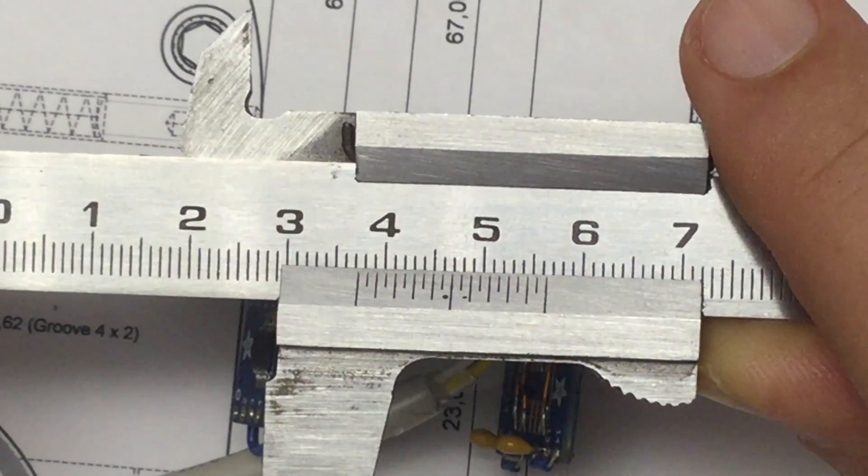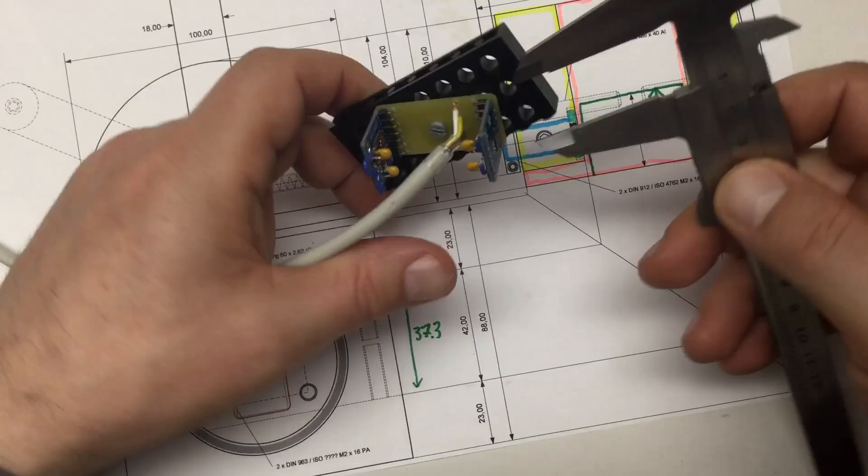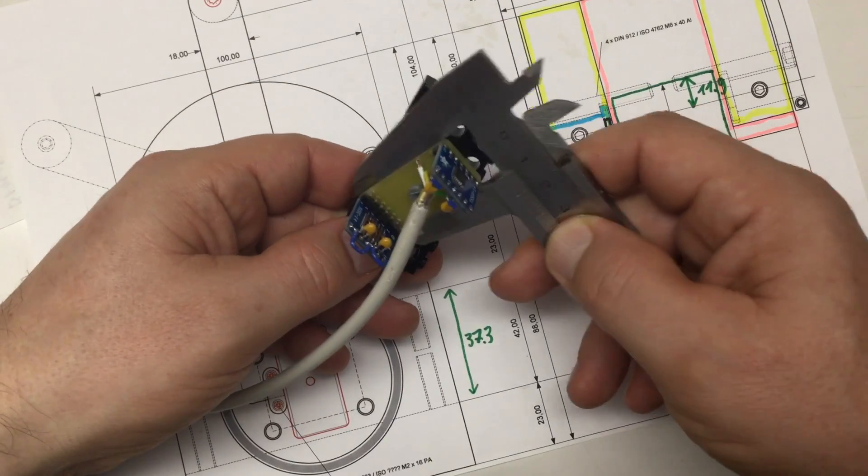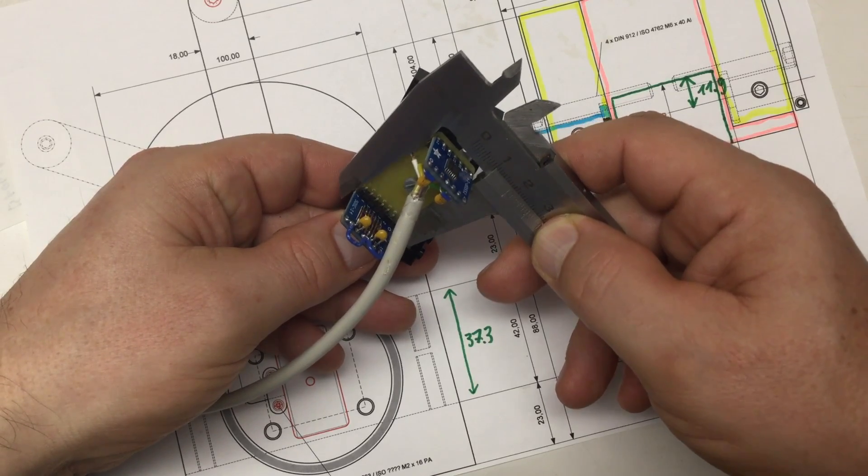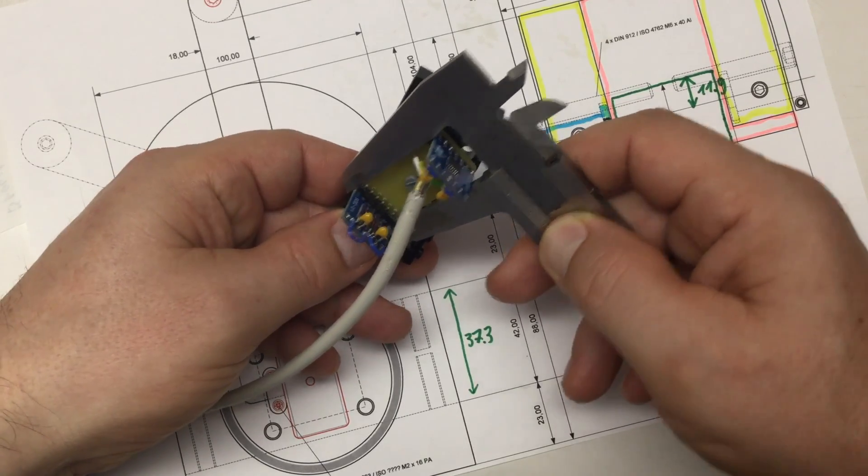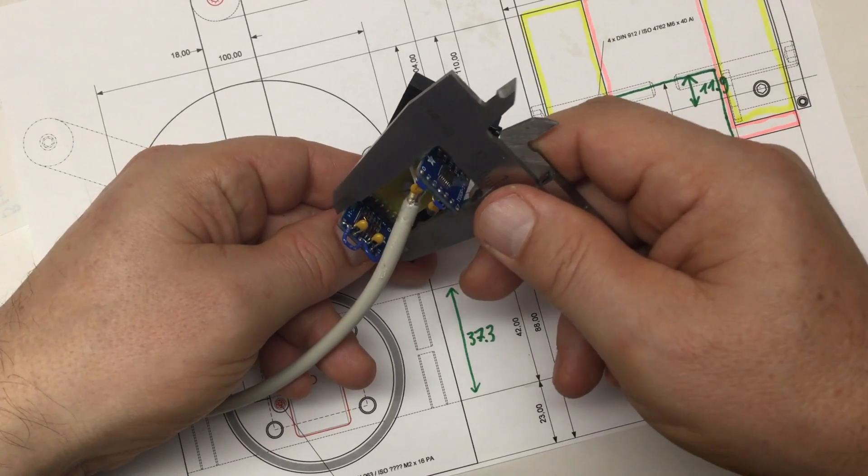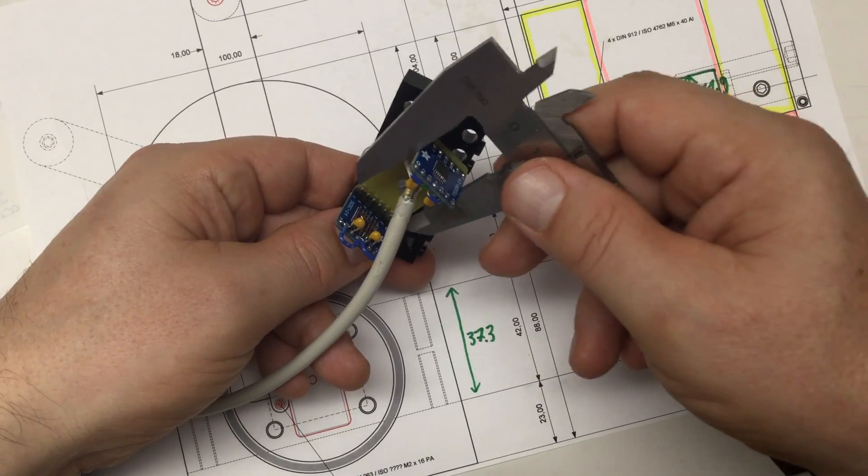Lastly we have to consider the width of the whole thing, the assembly. I already adjusted my caliper here to the width. Something's hanging here, but overall that's working out, and that's 18.1.